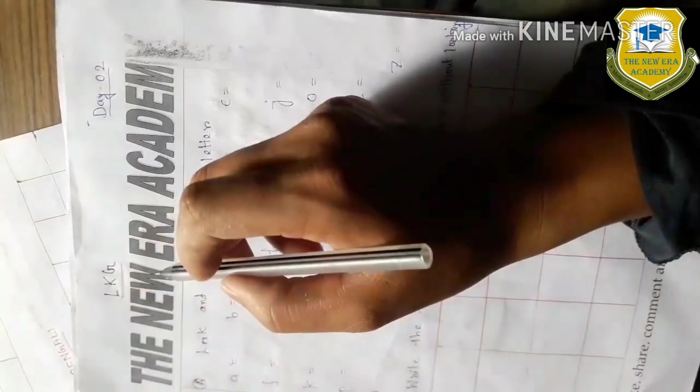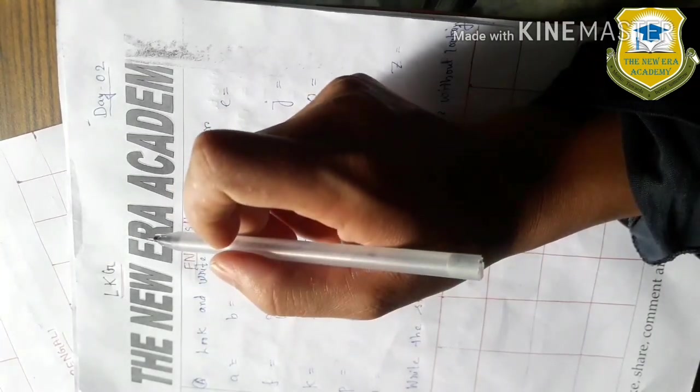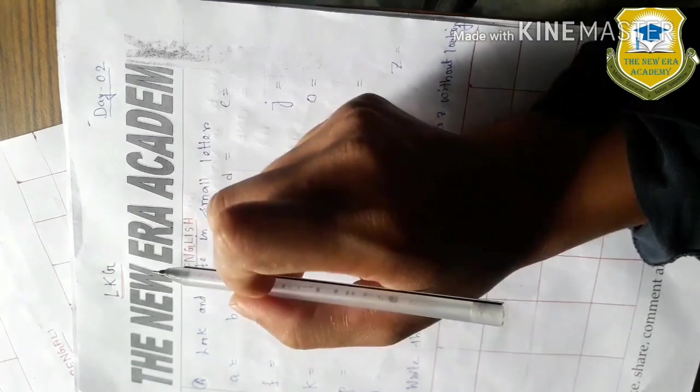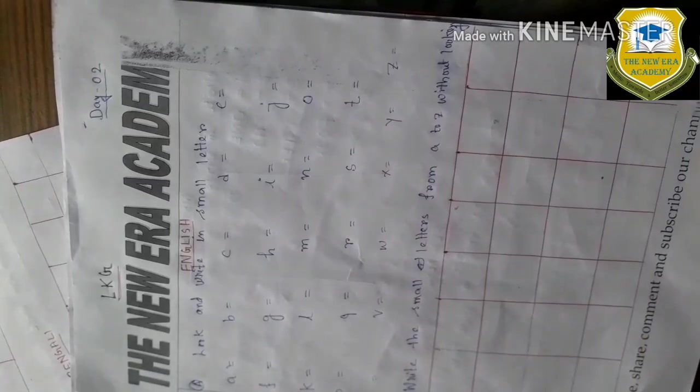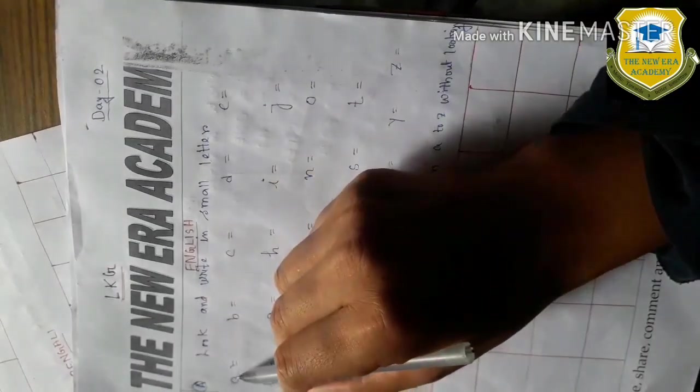In our last class, we covered capital letters - how to write capital letters with looking and without looking. Now we will have the children practice small letters.